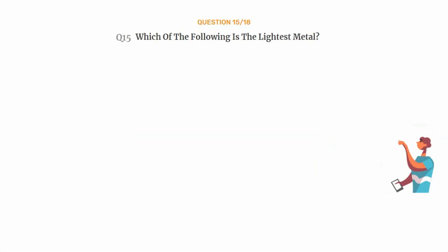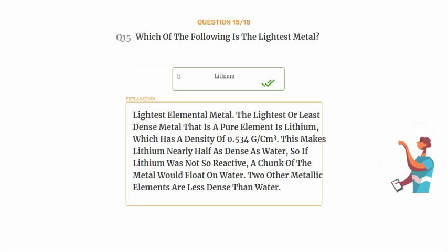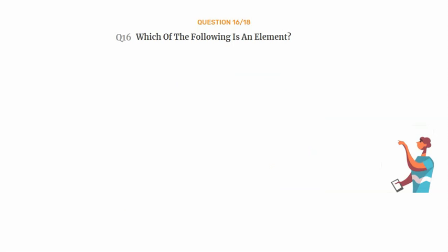Question number fifteen: which of the following is the lightest metal? Option A: mercury, option B: lithium, option C: lead, option D: silver. The correct answer is option B: lithium. The lightest or least dense metal that is a pure element is lithium, which has a density of 0.534 g/cm³. This makes lithium nearly half as dense as water, so if lithium were not so reactive, a chunk of the metal would float on water.